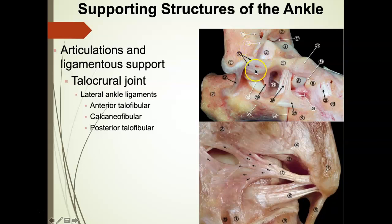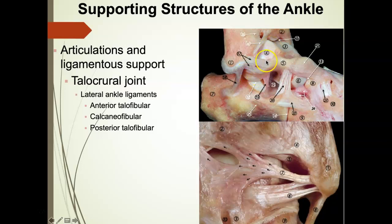The ATFL is the only ligament that has a direct attachment to the talus. When we sprain our ankle and rupture this ligament, we no longer have any restraint holding that talus in its place. That will be detrimental for arthrokinematics of the ankle joint as we discuss ankle injuries — but it's a concept you should understand now.